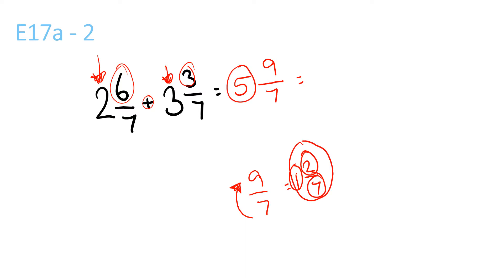And plus it by 5, so that's 6 and 2 over 7. Sorry guys, for the first question I accidentally missed out a part. At the end I'll go over that question again.